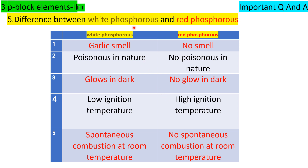Difference between white phosphorus and red phosphorus — very important, three marks. White phosphorus has a garlic smell; red phosphorus has no smell. White phosphorus glows in the dark; red phosphorus does not glow in the dark. White phosphorus has a low ignition temperature and shows spontaneous combustion at room temperature; red phosphorus has a high ignition temperature and no spontaneous combustion at room temperature.